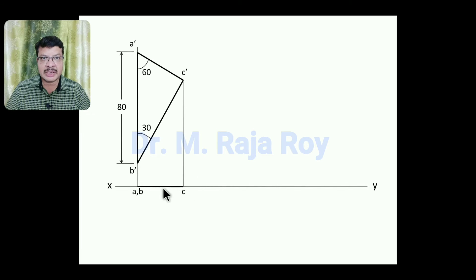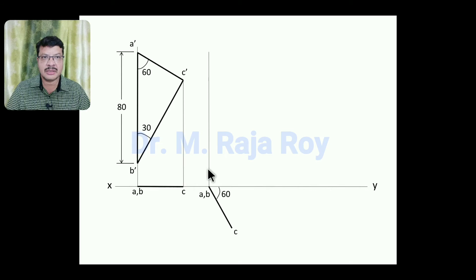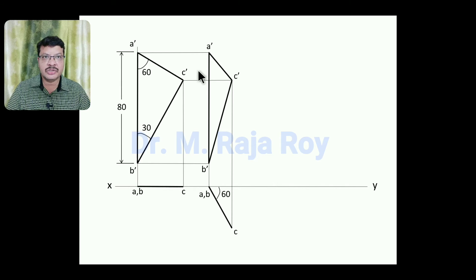Next, the surface inclination can be represented in the top view at 60 degrees inclination. This is the starting point A comma B. Measure this length with a compass and mark that here to get point C. Draw the projectors — this is the projector of A and B. From here, draw the locus of A dash; here you are going to get A dash. Then draw the locus, and here you are going to get B dash. Draw the projector from C, then the locus from C dash — here you are going to get C dash. This is the reduced front view.